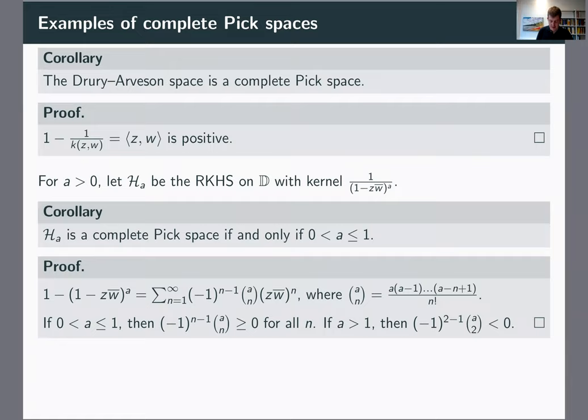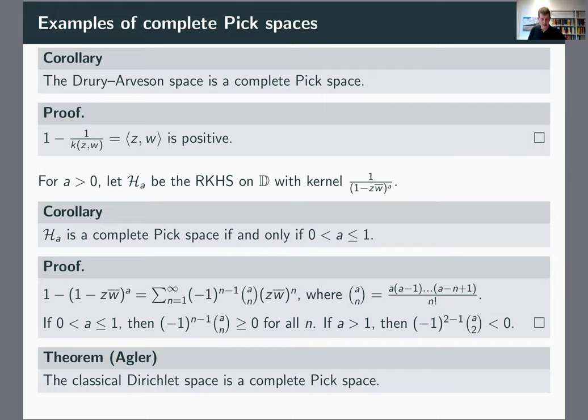If you take the limit as a goes to zero, you get the classical unweighted Dirichlet space, which is also a complete pick space. You can prove it using McCulloch-Quiggin, but the computation is more complicated. Actually this predates McCulloch-Quiggin — it's a theorem of Agler from 1988 who showed directly that the classical Dirichlet space is a complete pick space. Quiggin says in his paper he was influenced by this argument of Agler, so this theorem of Agler is really what got the whole thing started. The takeaway message is that there are complete pick spaces people care about independently — like the Drealison space and the classical Dirichlet space, which we learned about in Tom Ransford's lectures.